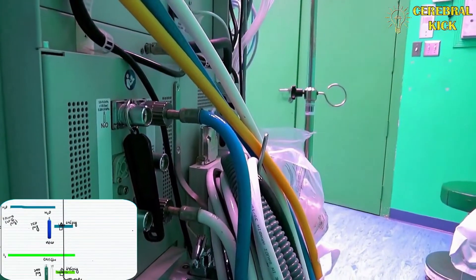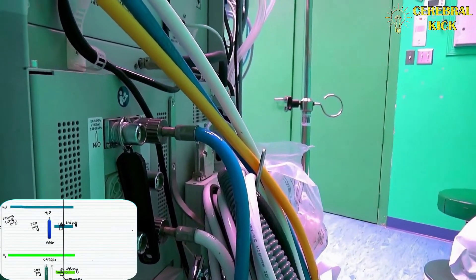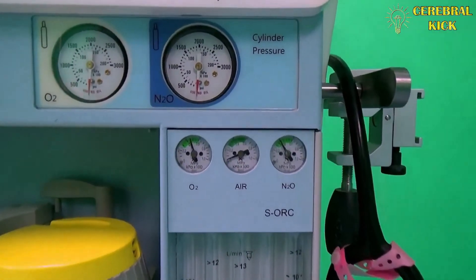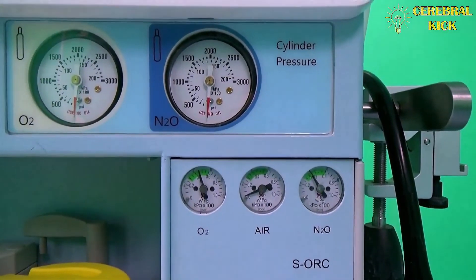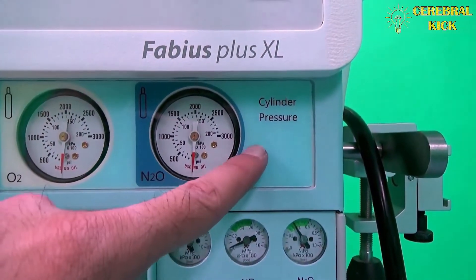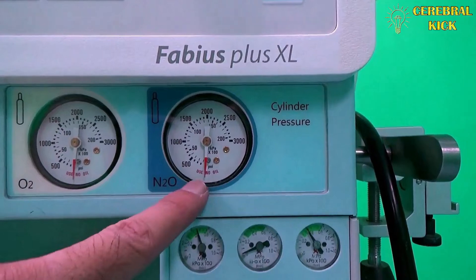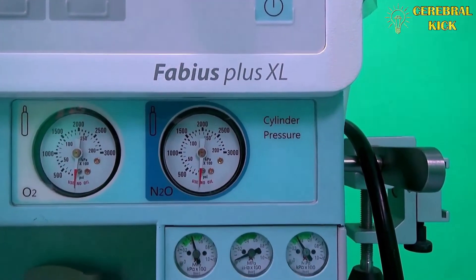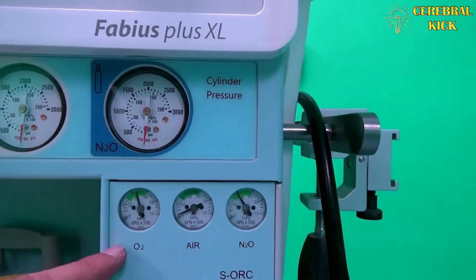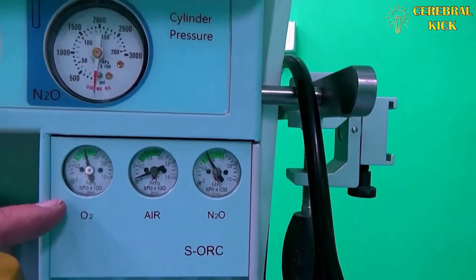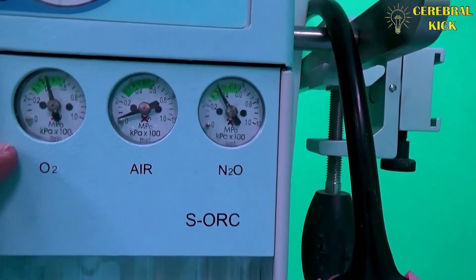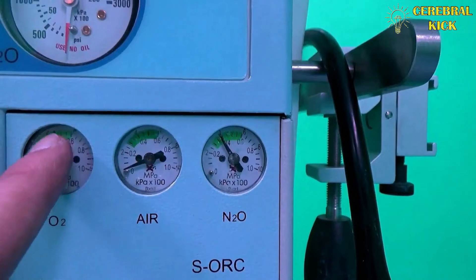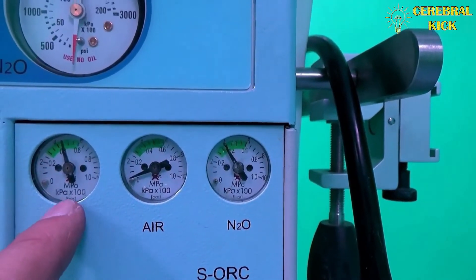A question arises: how can we know the exact pressures of pipeline and oxygen cylinders? Well, on the front panel, there's a separate pressure gauge for cylinders - you can see for nitrous oxide and oxygen it's zero at the moment because we have shut the cylinders. Below you can see the pressure gauges of various pipelines - for oxygen it's around 4.2 or 4.1 bar, so that accounts for around 55 to 58 PSIG which is quite normal.